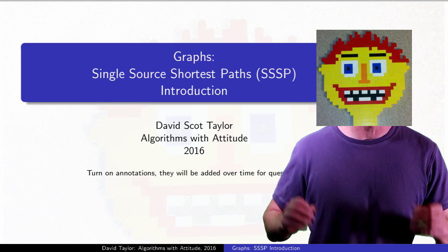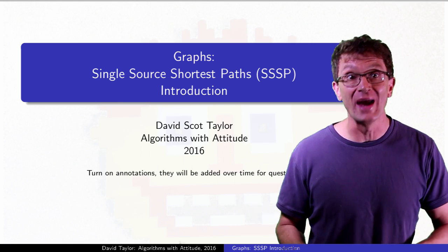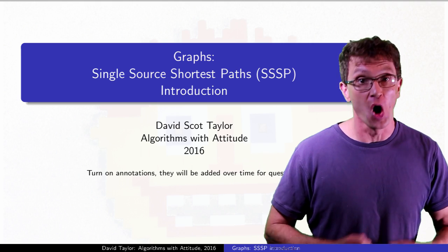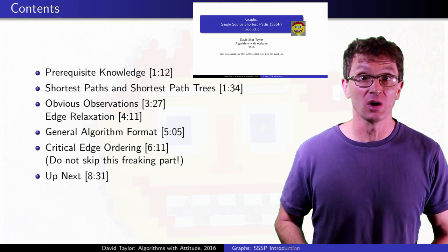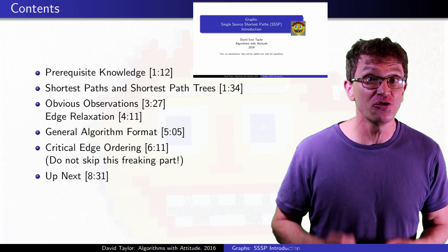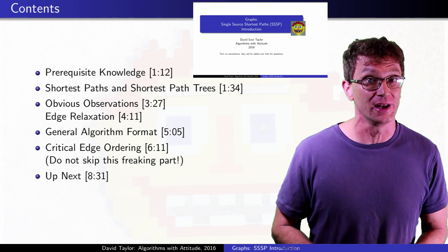This is the first video in a playlist on finding the shortest paths in a weighted graph from one vertex to all other vertices. The playlist will cover at least three different algorithms, and this video gives the outline for all of them. It is critical for each.